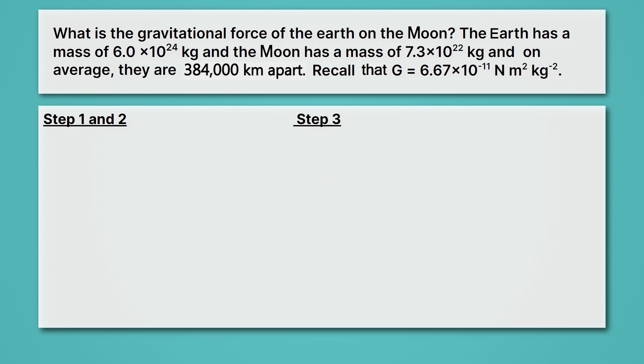We'll begin by writing down what we know. Let's start with the mass of the Earth. And we'll use a little subscript e there for Earth. And we know the mass of the Earth is 6.0 times 10 to the 24th kilograms.